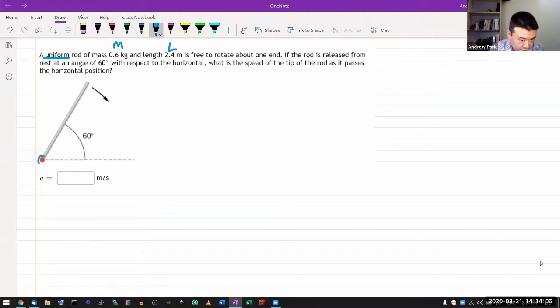is free to rotate about one end. So I think this is going to be important. This is going to be my pivot point. If the rod is released from rest at an angle of 60 degrees, let me call that theta. With respect to the horizontal, what is the speed of the tip of the rod as it passes the horizontal position?